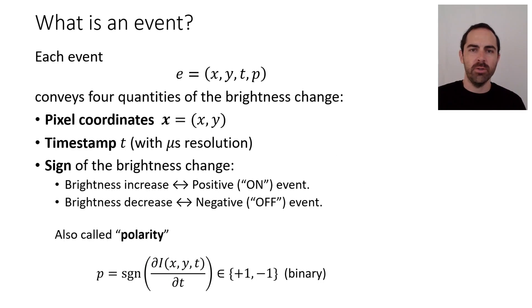What is an event? Each event has four quantities of the brightness change. x and y are the pixel coordinates where the brightness change happened. Then t is the timestamp with microsecond resolution at which the brightness change happened. And then p is the sign of the brightness change. If there is a brightness increase, it's a positive event or so-called on event. If there is a brightness decrease, we call it the negative event or off event.